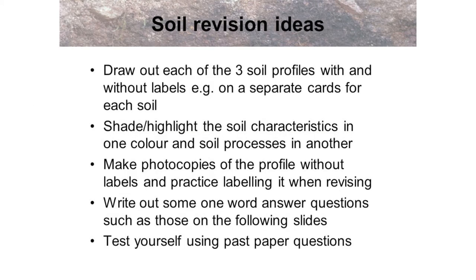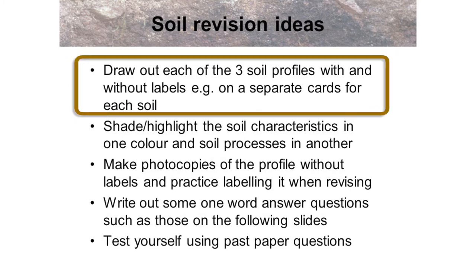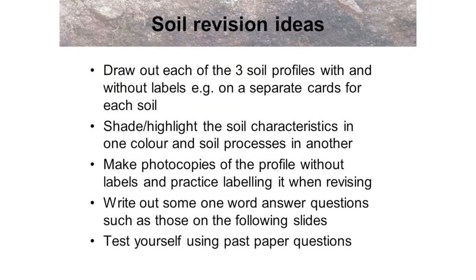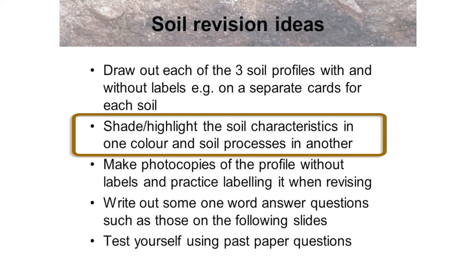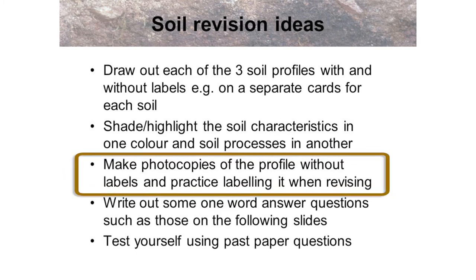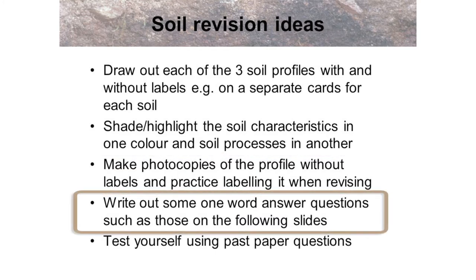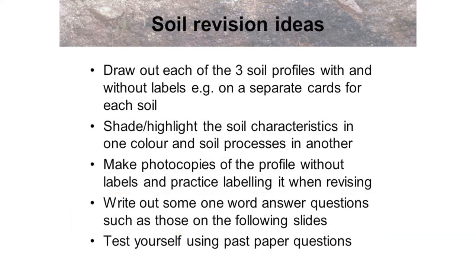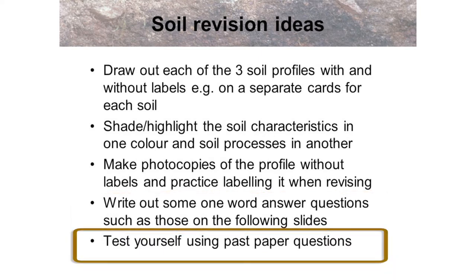We now have some ideas to help you with your soil revision. You could draw out each of the three soil profiles — brown earth soils, pod soils and gleys — with and without labels, for example on separate cards for each soil. Shade or highlight the soil characteristics in one colour and soil properties and processes in another. Make photocopies of the profile without labels and practise labelling when revising. Write out some one-word-answer questions, then test yourselves using past paper questions too.